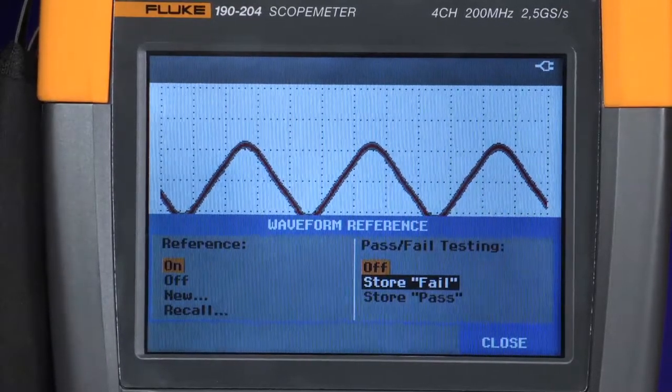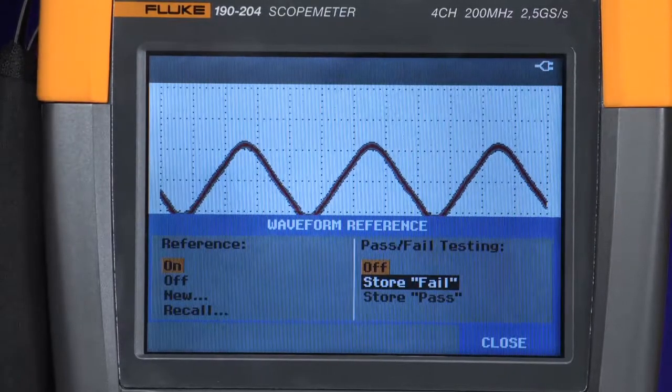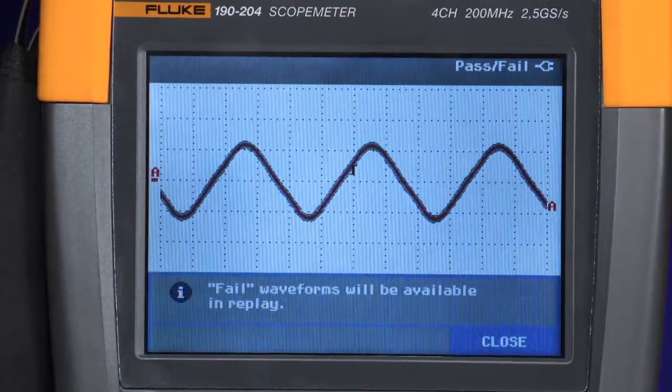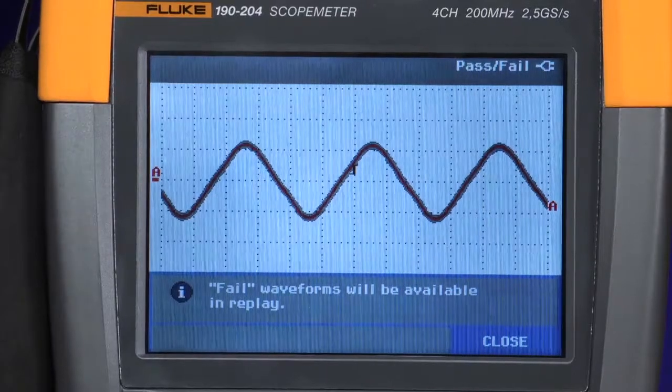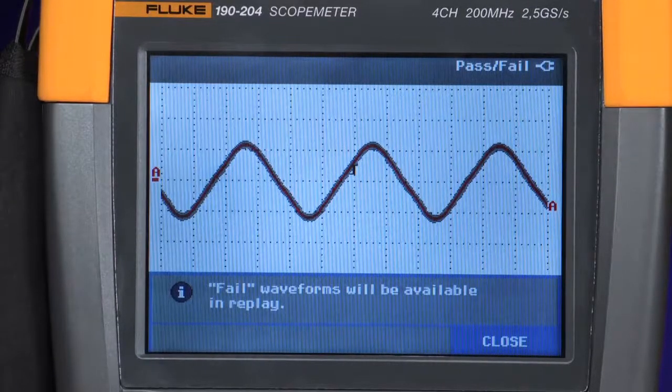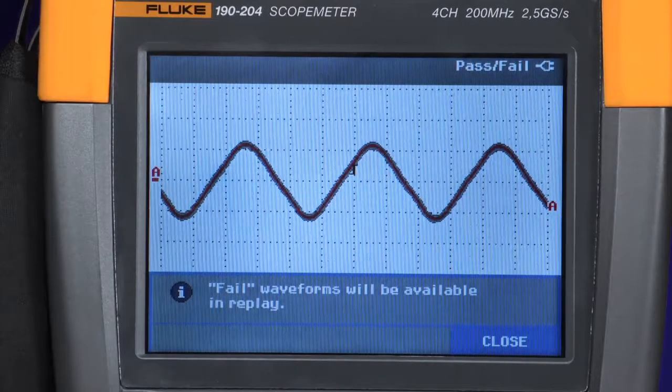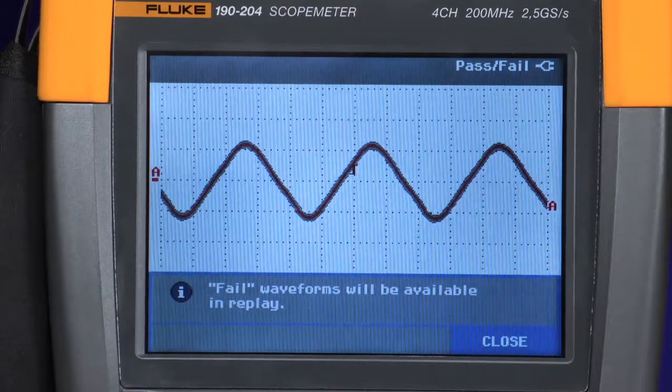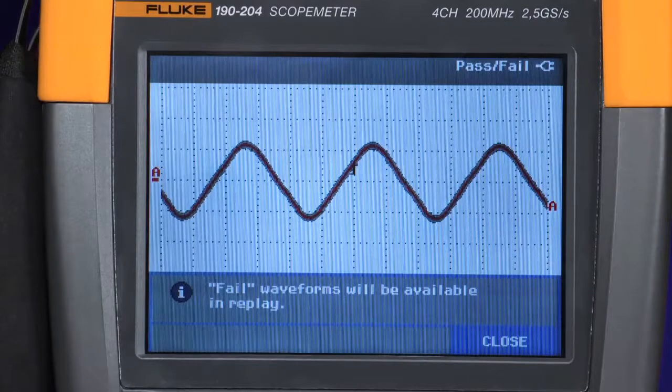For this test, we'll choose store on fail. Now the oscilloscope will monitor the input waveform and compare it to the waveform envelope that we've just created. Any time a trace falls outside of that plus 2 pixel window, it will immediately capture that screen and store it to the replay memory.